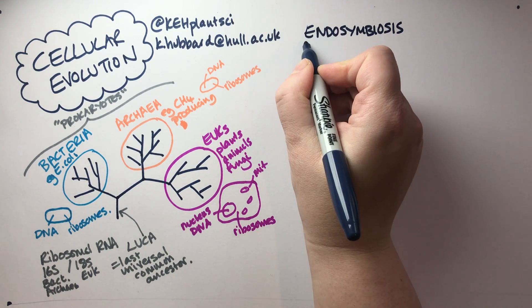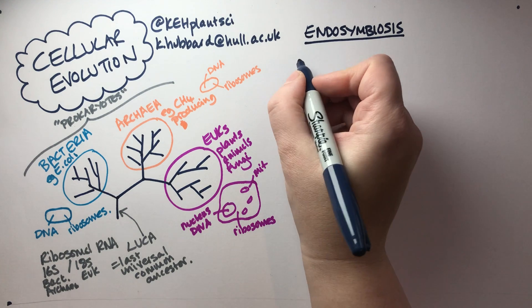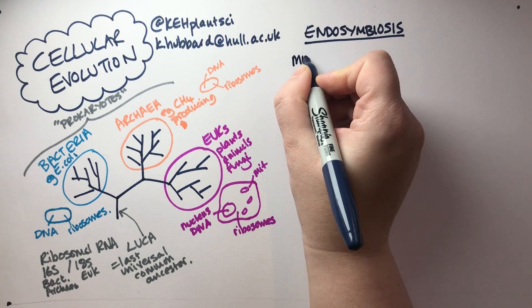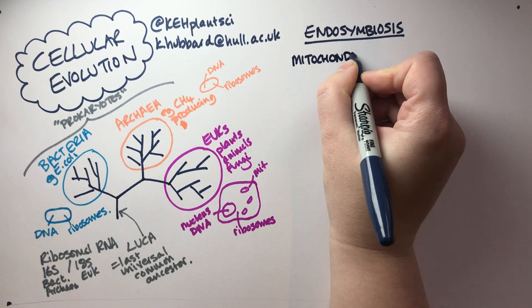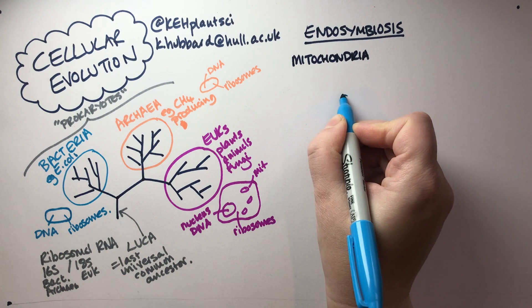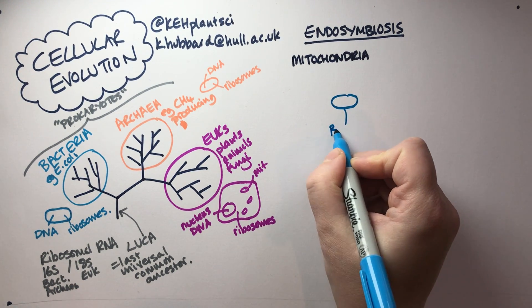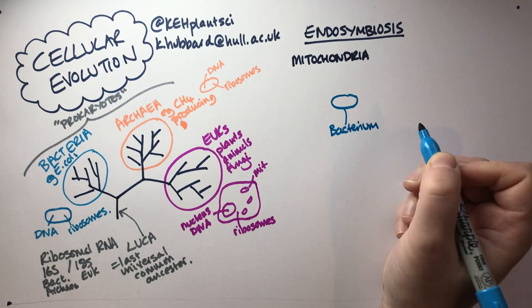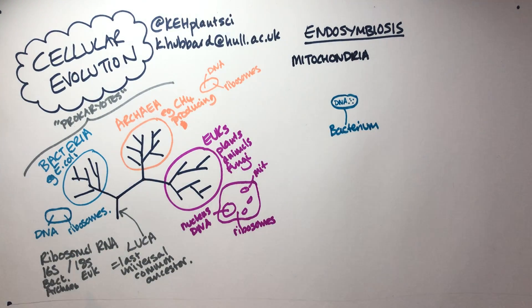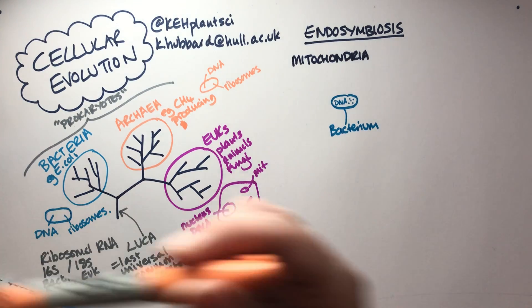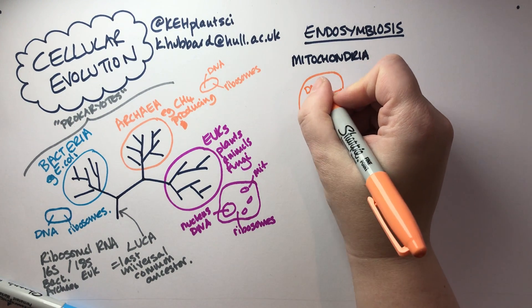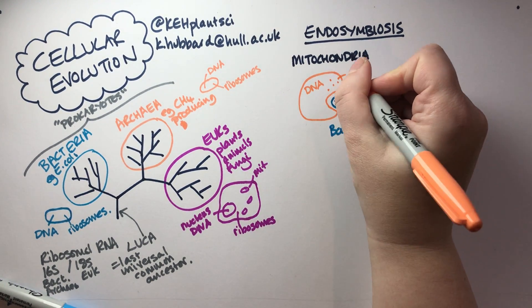There have been two great endosymbiotic events in evolutionary history. The way endosymbiosis works — thinking first about the mitochondria — is that one day there was a bacterial cell swimming around happily with DNA and ribosomes inside its cell, and then one day it gets engulfed by another cell which also has DNA in its cytoplasm and also has ribosomes.